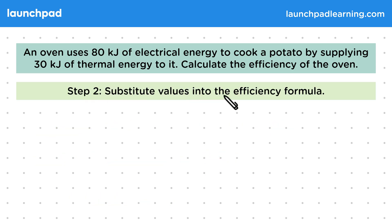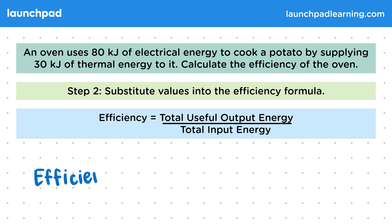For step 2, let's substitute the values into the efficiency formula. Efficiency is equal to 30 kilojoules divided by 80 kilojoules, and that gives us 0.375, or as a percentage we can multiply it by 100 and we get 37.5%.